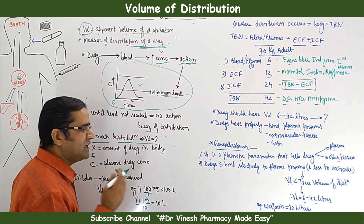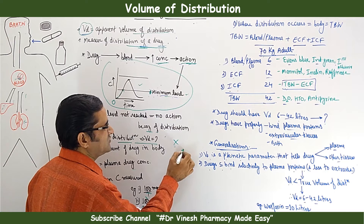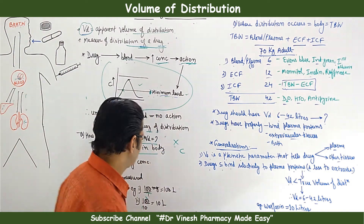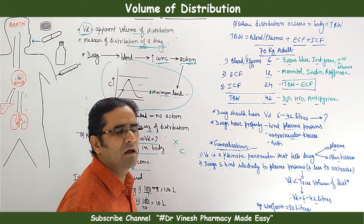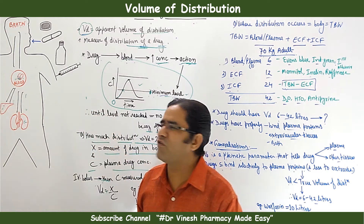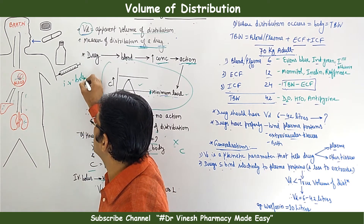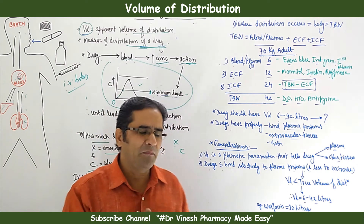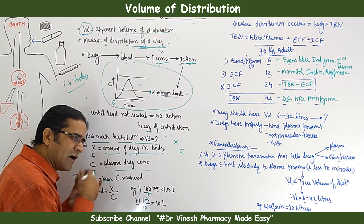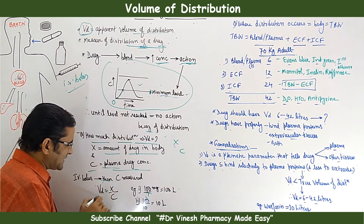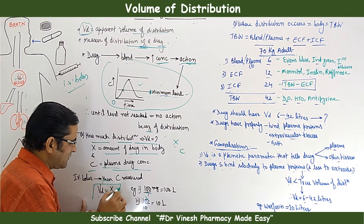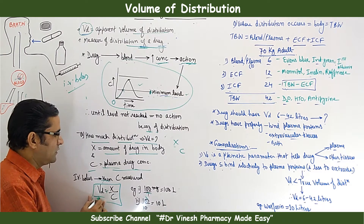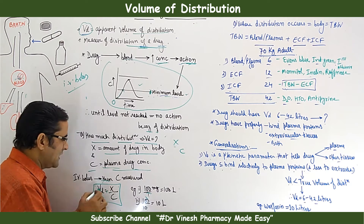There exists a constant relationship between X and C, where X is the amount of drug in the body and C is the plasma drug concentration. We administer the drug as an IV bolus — the total amount of drug given at one time intravenously. After administration, the plasma concentration is measured, and using the formula, we calculate Vd. Volume of distribution equals X divided by C.